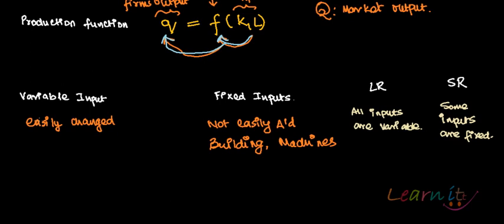Fixed inputs are those which cannot be easily changed in the short term — for example, buildings and machines. You've paid for machines and buildings, so you can't just go out of business. You can't, on the second day, decide to use half the building, increase floors, or shift to another building. These are fixed inputs.